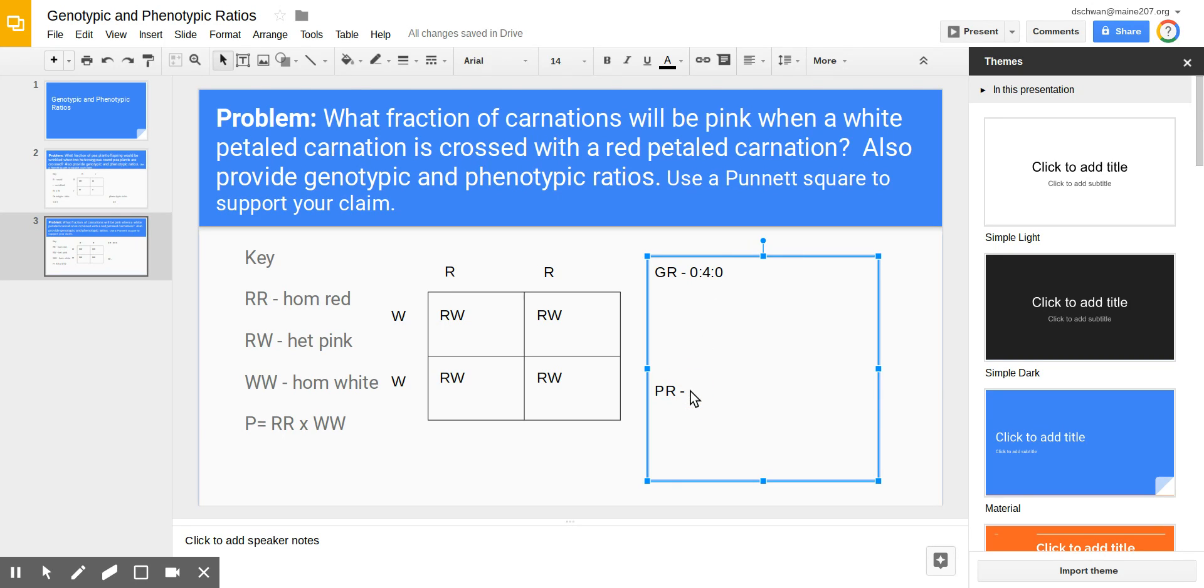Now for phenotypes, what would be the phenotypic ratio? I hope you got it right and I'm sure that you did. It is a zero to four to zero phenotypic ratio. The genotypic ratio and the phenotypic ratio are always the same in incomplete dominance problems because there are three potential genotypes by doing a cross such as this. There are also three potential phenotypes red to pink to white.